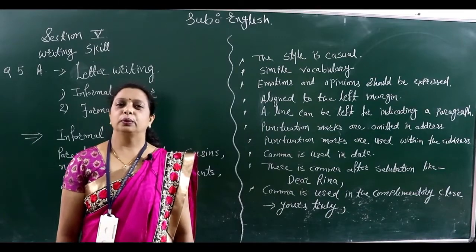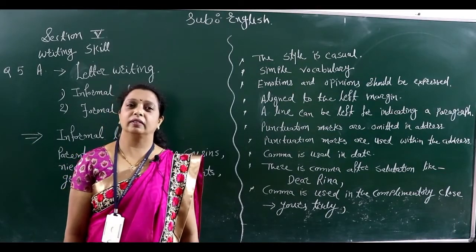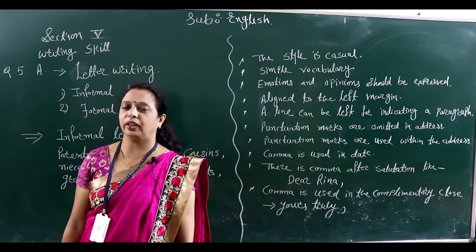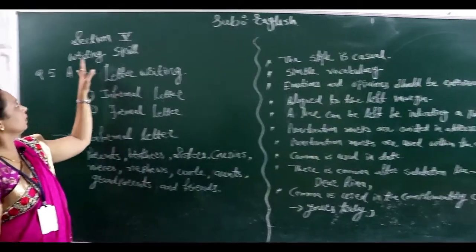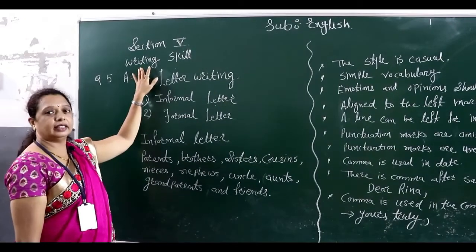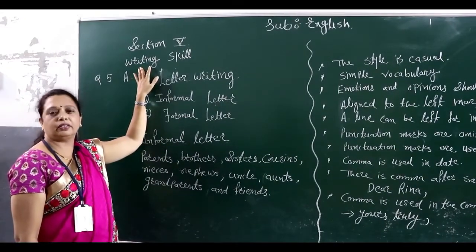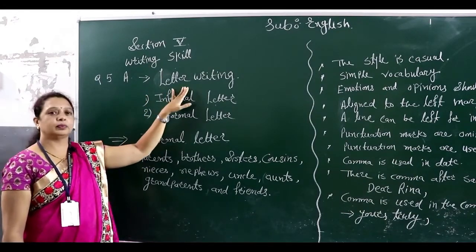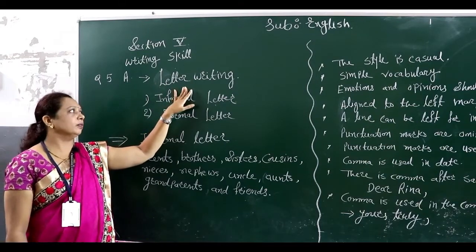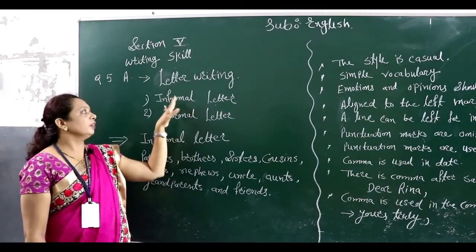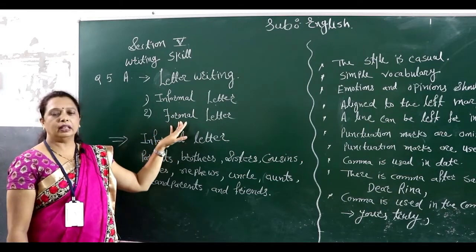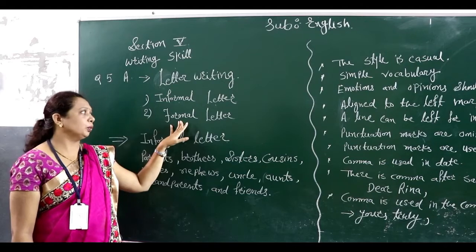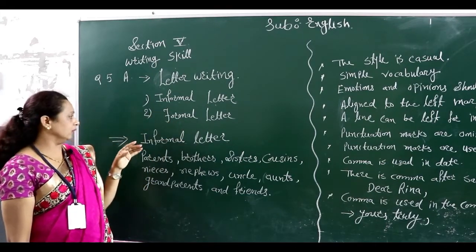Good morning students. Today I discuss an important topic related to unit section 5, and the topic is writing skill. Section 5 writing skill covers 25 marks. Here I discuss question number 5A, letter writing, which carries 5 marks. There are two questions asked: informal letter or formal letter. So we discuss both types — formal letter and informal letter.